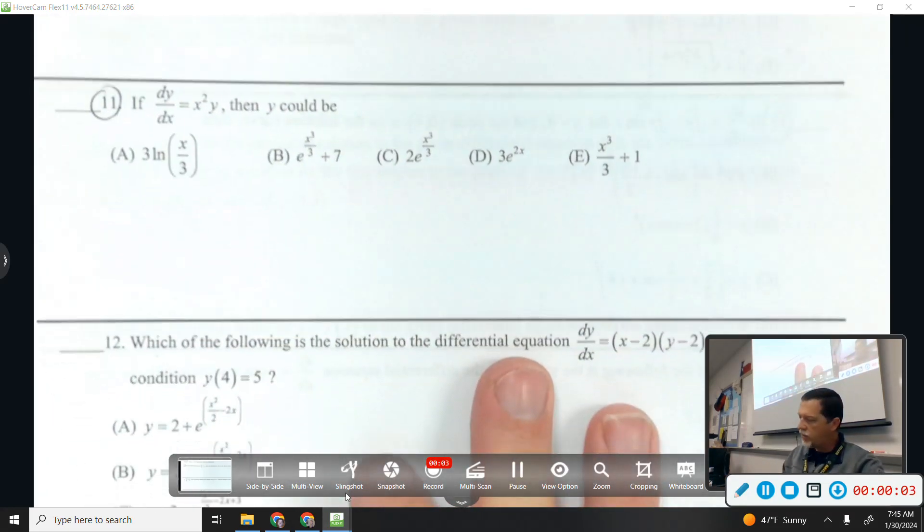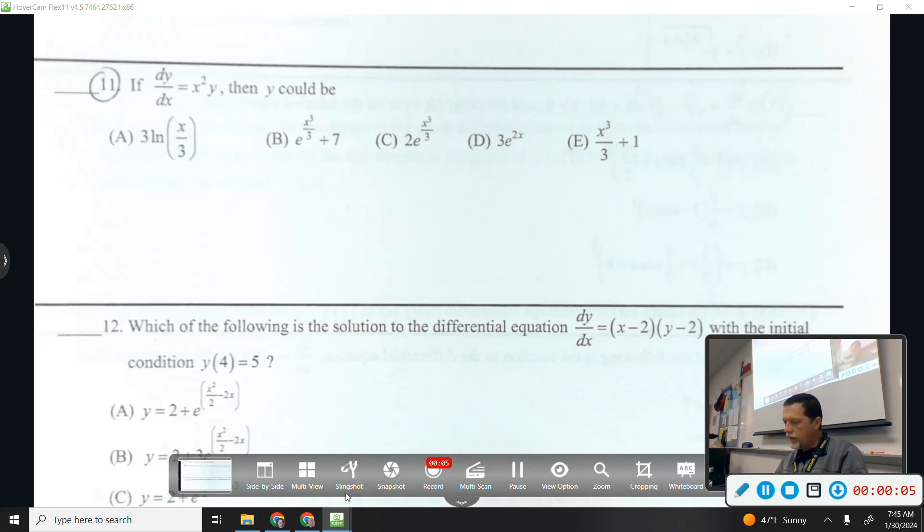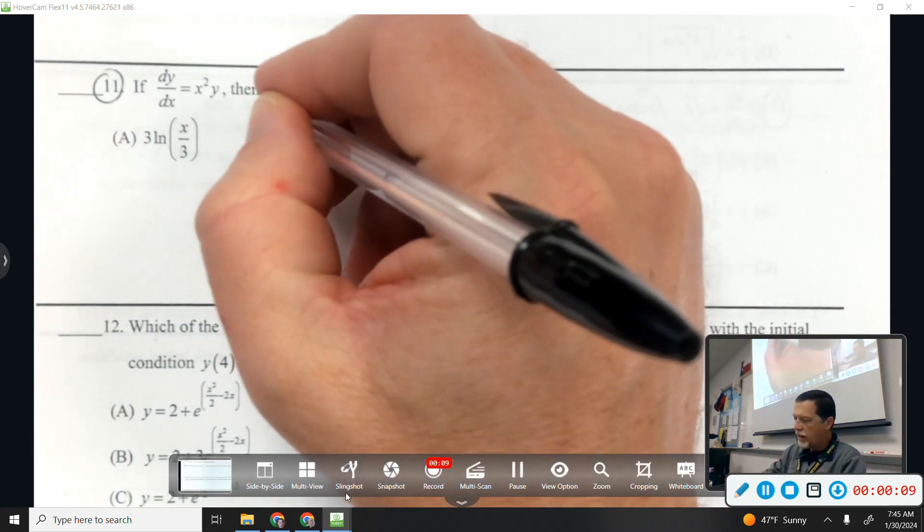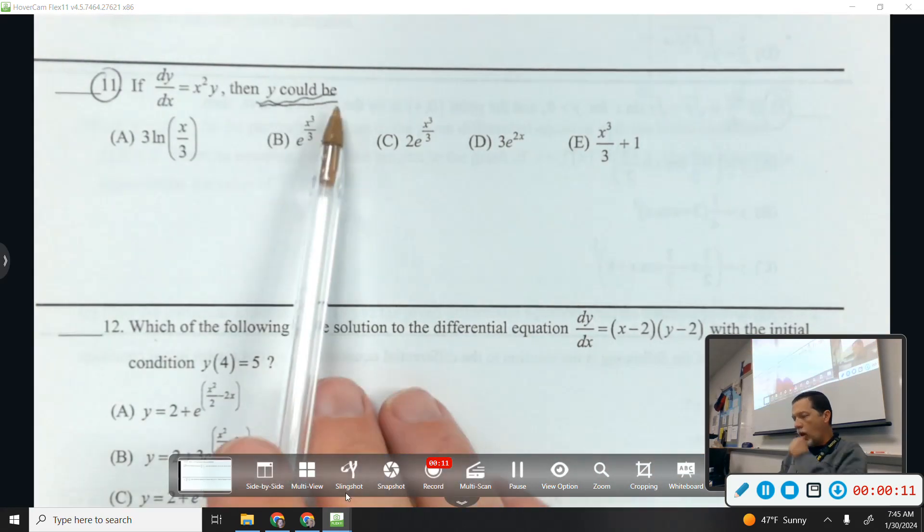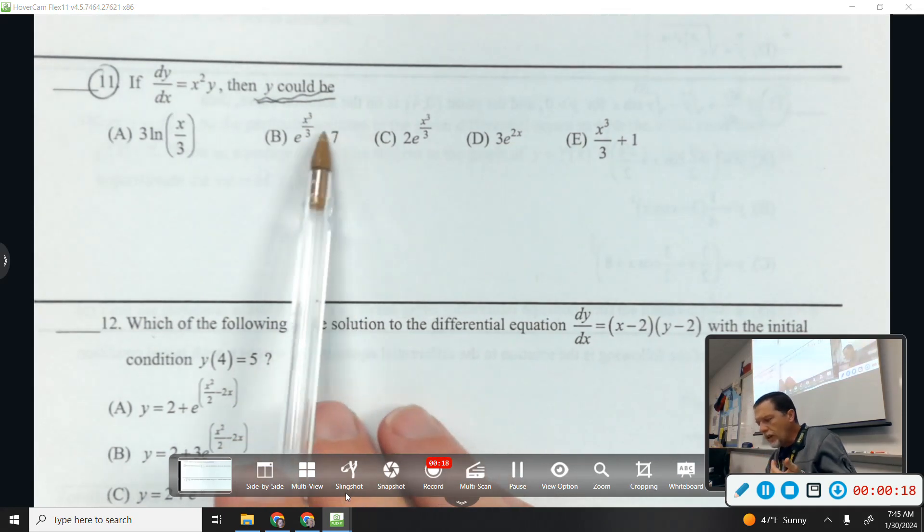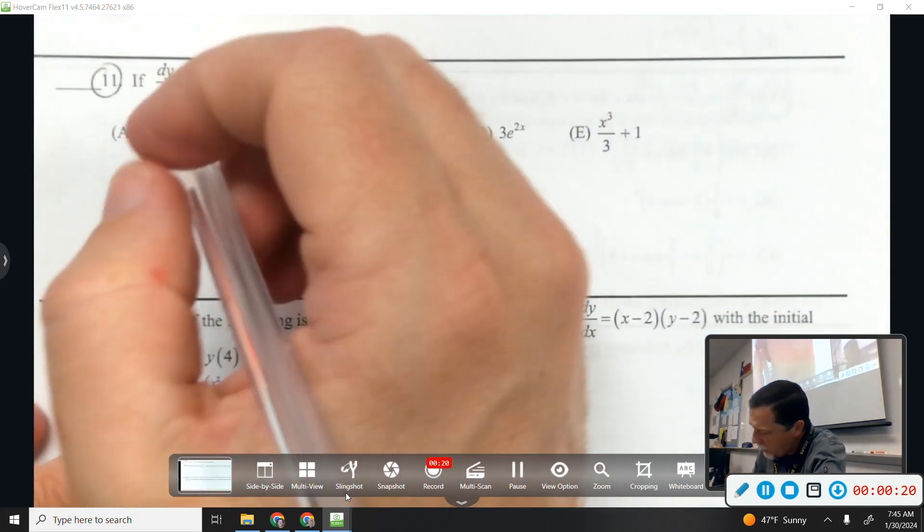Looking at 10 through 18, let's look at number 11, especially since it says y could be. It hasn't given us enough information to find c, so let's just start the problem and see what happens here.